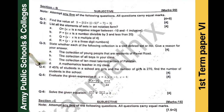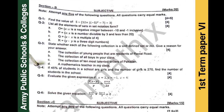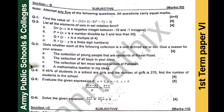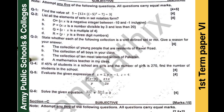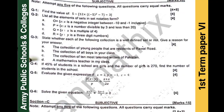In Section B, which carries 20 marks, you have to attempt any five questions out of six given questions. Each question carries four marks. The first question is from the first chapter. The second question is from sets — you have to list all the elements and write them in different forms of notation.